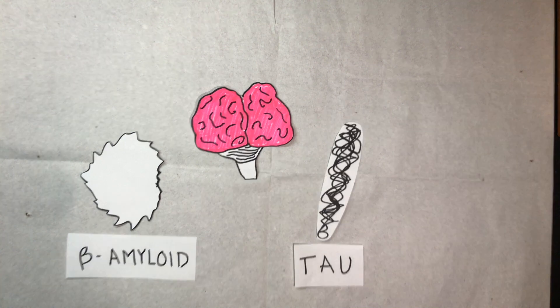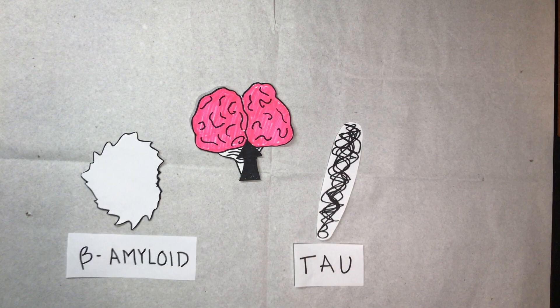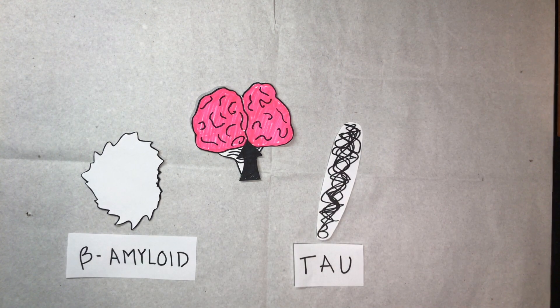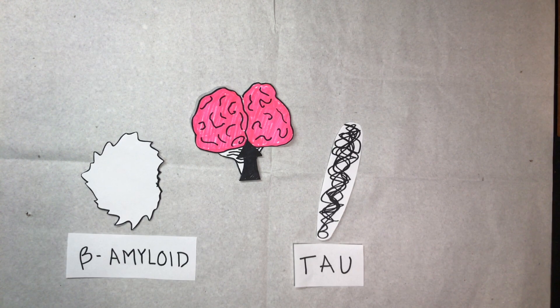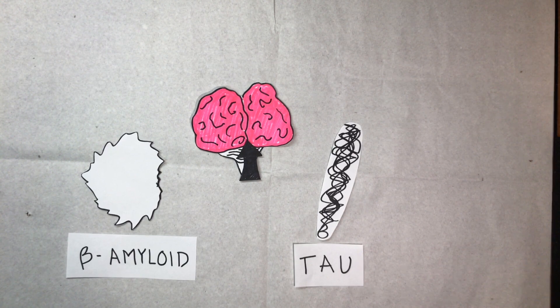They also form in a pattern, starting in the areas of the brain that are important to memory. Plaques and tangles can actually be found in neural tissue before the onset of dementia-like symptoms in someone with Alzheimer's.